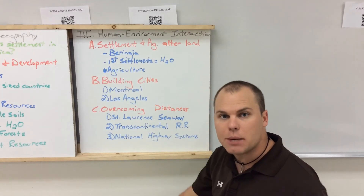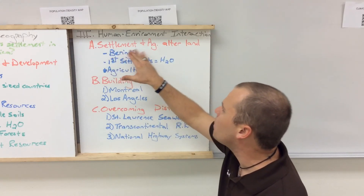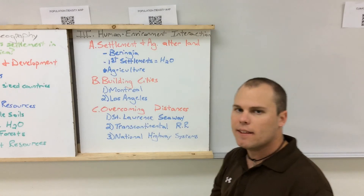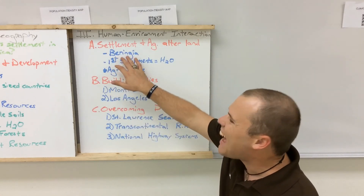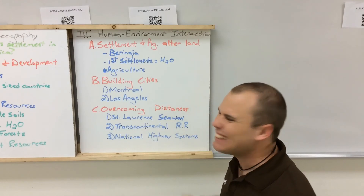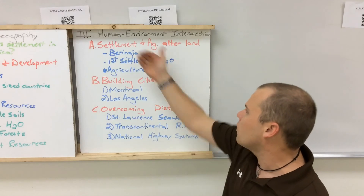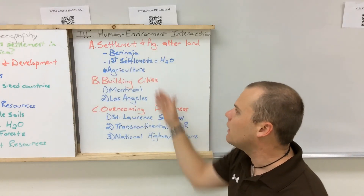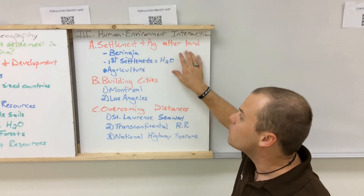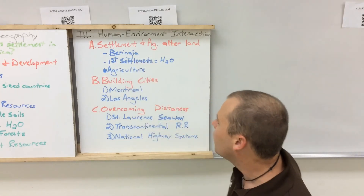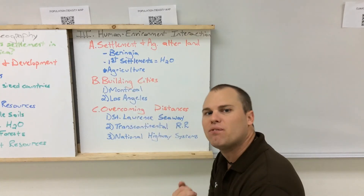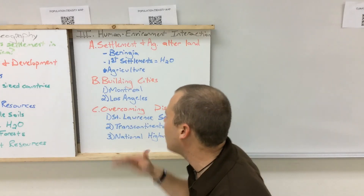Now introducing human-environment interaction — how humans change, modify, and adapt to the environment. The first section covers settlement patterns and agriculture. The Beringia land bridge is the idea that thousands of years ago ancient Asian nomads walked across the Beringia land strait when ocean levels were lower because water was trapped in glaciers. They crossed into Alaska and settled further into the United States near water. These are the ancestors of the Inuit and Eskimo peoples. Agriculture was key then and remains huge today, especially further south where fertile land and climate allow for it.